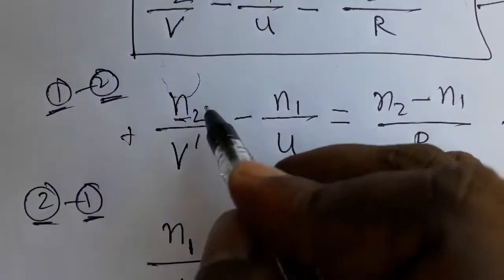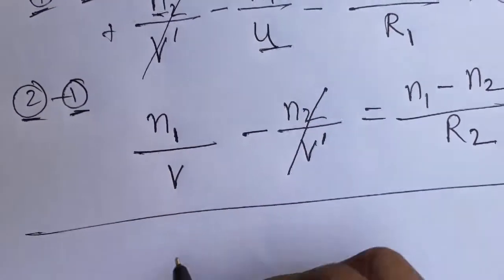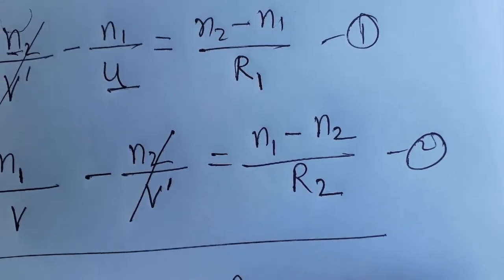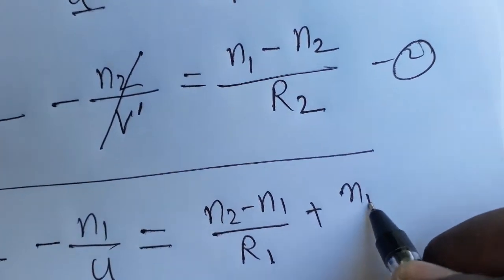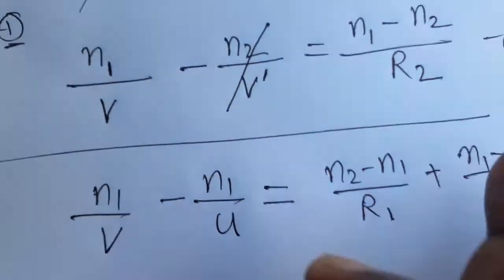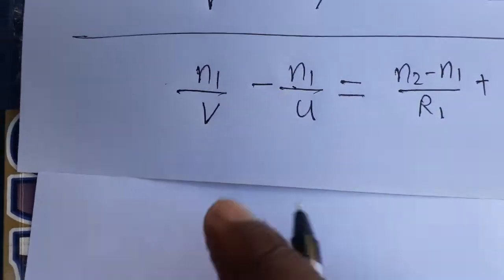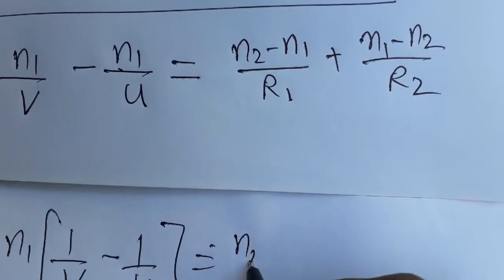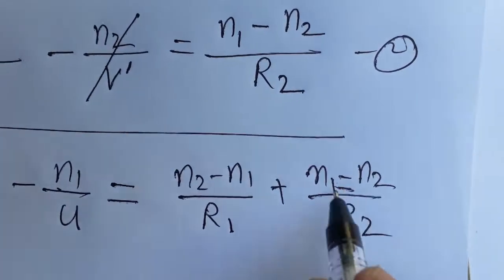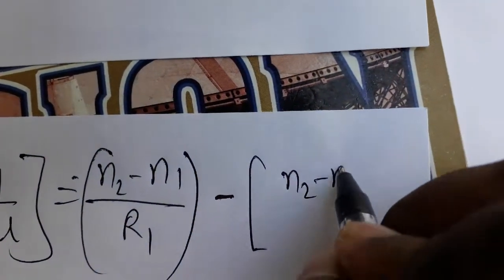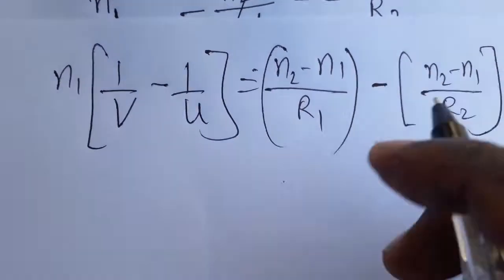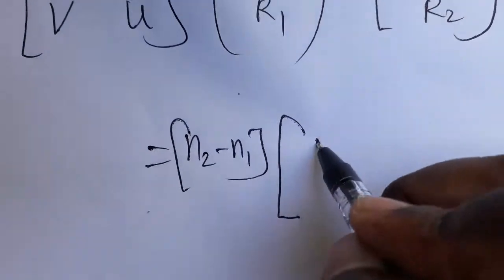Adding Equation 1 and Equation 2, the n2/v' and −n2/v' terms cancel out. We are left with: n1/v − n1/u = (n2 − n1)/R1 + (n1 − n2)/R2. Taking n1 as common on the left side: n1(1/v − 1/u). On the right side, taking (n2 − n1) as common: (n2 − n1)(1/R1 − 1/R2).